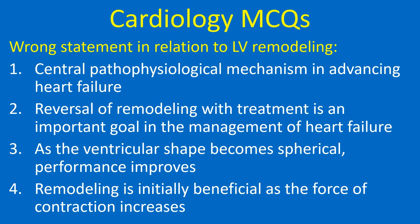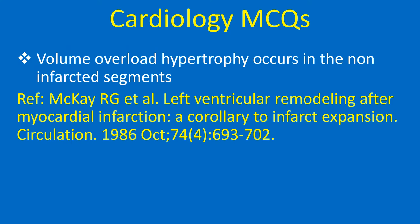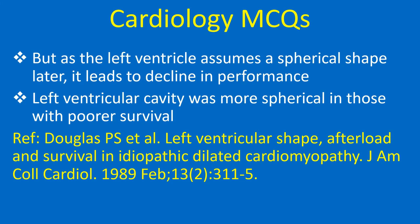Wrong statement in relation to left ventricular remodeling: 1. Central pathophysiological mechanism in advancing heart failure, 2. Reversal of remodeling with treatment is an important goal in management of heart failure, 3. As the ventricular shape becomes spherical, performance improves, 4. Remodeling is initially beneficial as the force of contraction increases. Correct answer: 3. As the ventricular shape becomes spherical, performance improves — this is wrong. Increase in LV volume is initially beneficial per Starling's law; volume overload hypertrophy occurs in non-infarcted segments. But as the LV assumes a spherical shape, it leads to decline in performance. LV cavity was more spherical in those with poorer survival.